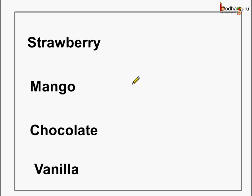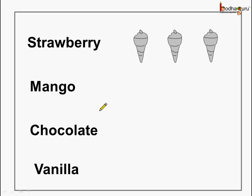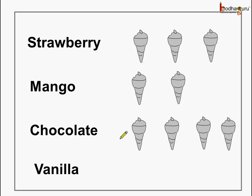Aman wanted strawberry, so he drew one ice cream cone in front of strawberry. He asked others and two of his friends also wanted strawberry, so he drew two more cones, making three strawberry ice creams. Next, coming to mango: one, two. Then coming to chocolate: one, two, three — four children wanted chocolate ice cream. And lastly vanilla: one child wanted vanilla ice cream. This way he drew the names and the number of cones required, and gave it to the ice cream vendor.